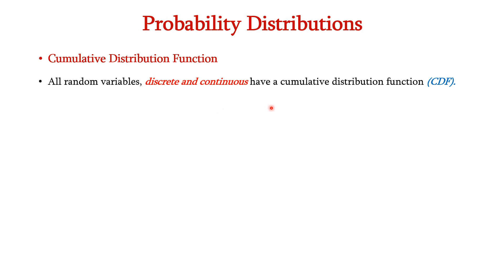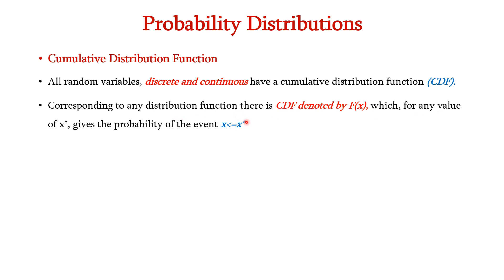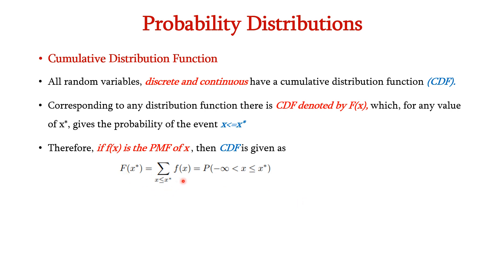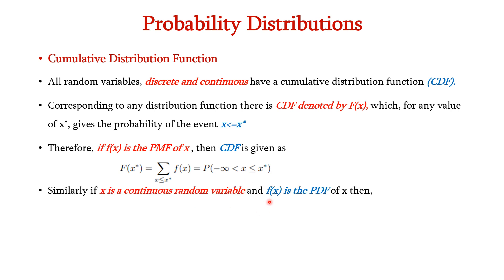Finally, let us see about the cumulative distribution function or CDF. All random variables, discrete or continuous, will have a CDF. Corresponding to any distribution function, there is a CDF denoted by F(x), which for any value x* gives the probability of the event X ≤ x*. If f(x) is the PMF of X, then the CDF is given as F(x*) = summation of f(x) for all x ≤ x*, where x ranges from minus infinity to x*. Similarly, for a continuous random variable, it is expressed as the integral from minus infinity to x* of f(x) dx.